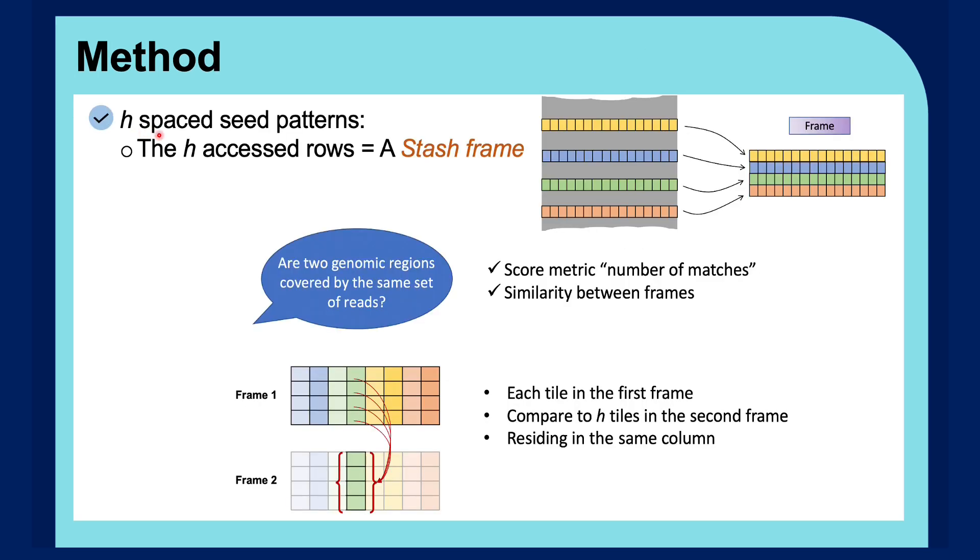Having H spaced seed patterns, each sliding window position will update H rows in stash, and we call these H accessed rows a stash frame.